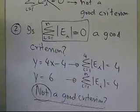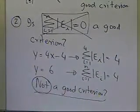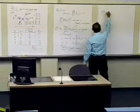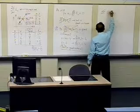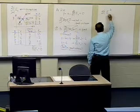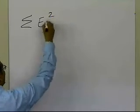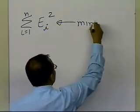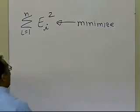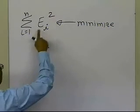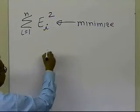This is not a good criterion to use, so I'm going to cross this off. What is a good criterion? The good criterion is to not sum the errors, and not sum the absolute value of the errors, but to square the errors — which takes care of negative and positive since the square is always positive — and then add those and minimize this. You minimize the sum of the squares of the residuals, and that is the criterion for least squares regression.